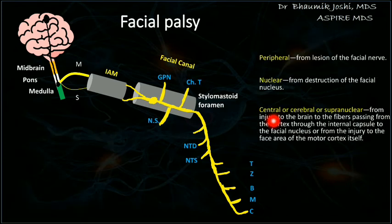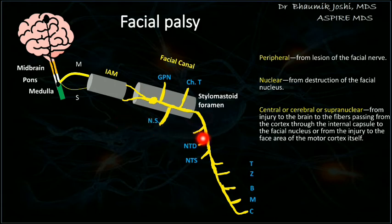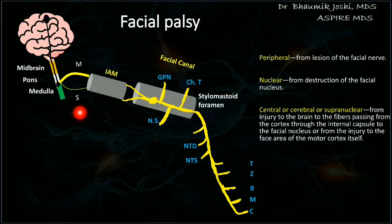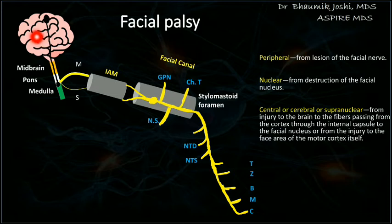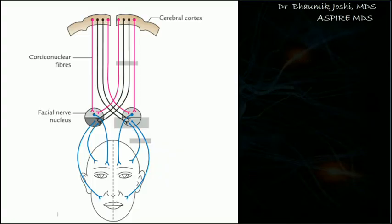Facial palsy or facial paralysis can take place in three forms. First is the peripheral kind, where the lesion is present in the facial nerve itself. Second is the nuclear kind, where there is disturbance at the nuclear level. Third is the supranuclear level, where injury to the brain damages fibers passing from the cortex to the nucleus.